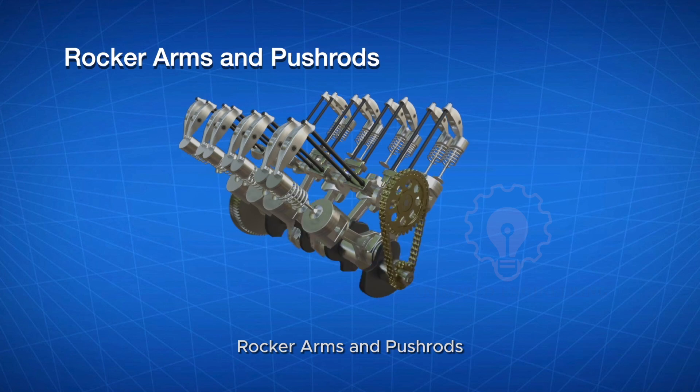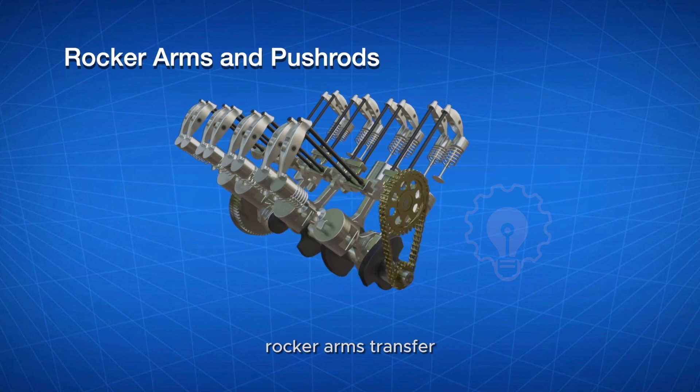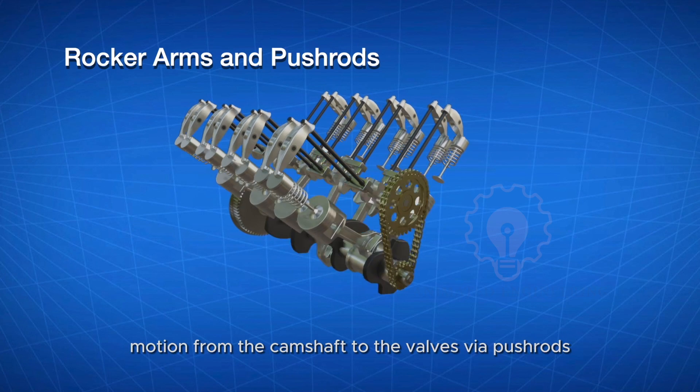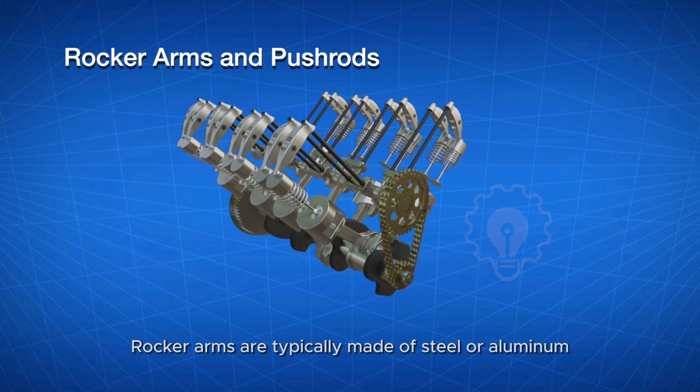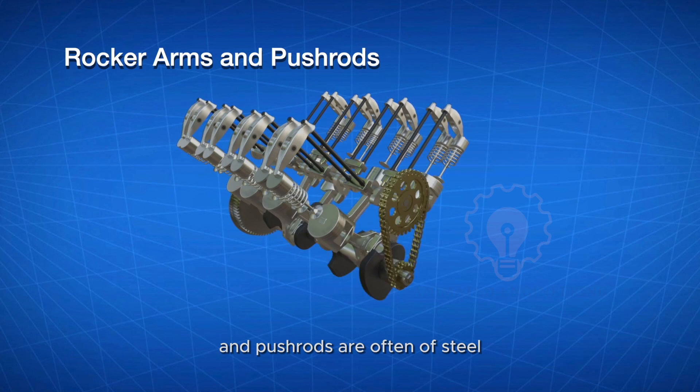Rocker arms and pushrods: In pushrod engines, rocker arms transfer motion from the camshaft to the valves via pushrods. Rocker arms are typically made of steel or aluminum, and pushrods are often of steel.